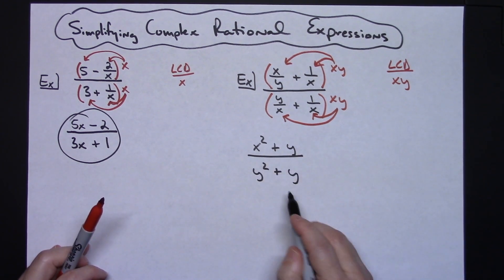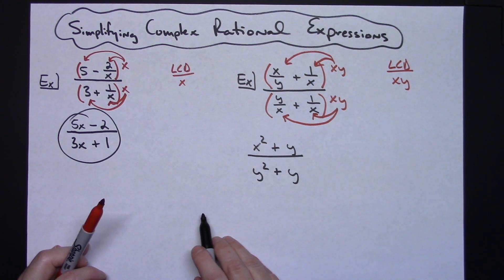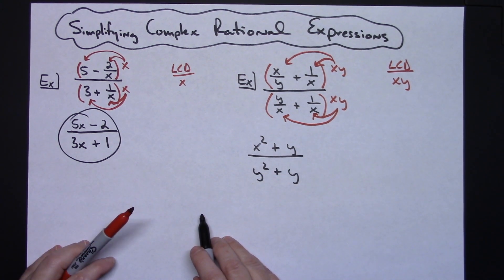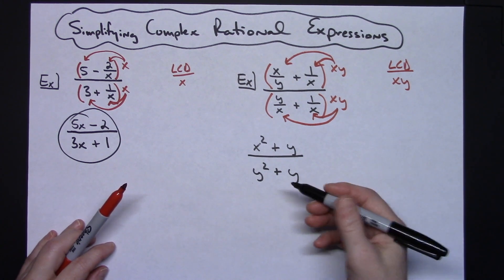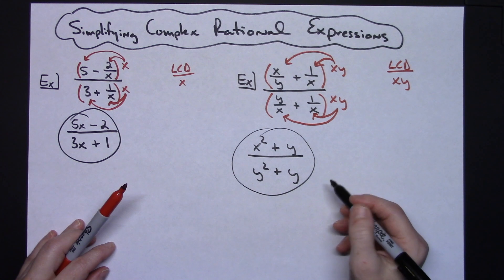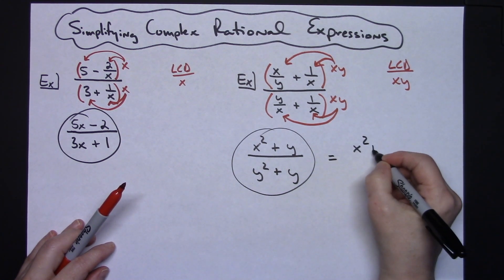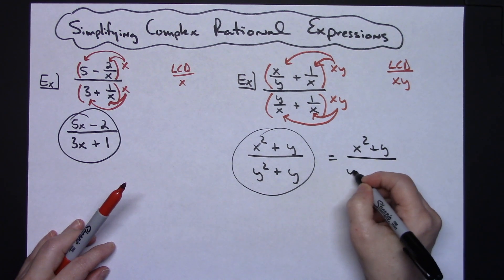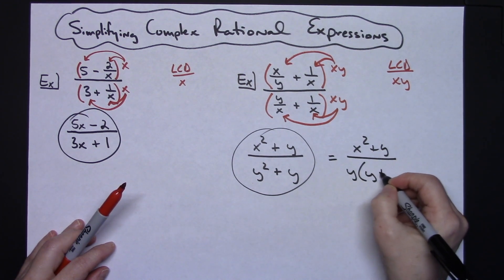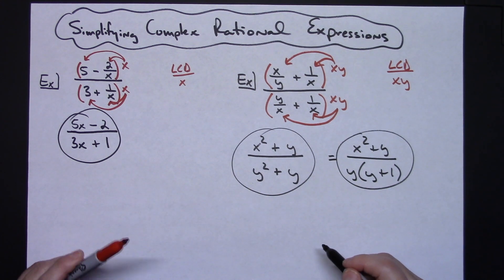Now looking at this expression, technically I could factor out a y on the bottom, but I can't factor anything out on the top, so there would be no reason to do that unless you want that expression in completely factored form. So this would be a perfectly acceptable answer, or I could do the x squared plus y and then factoring out a y there would be a y plus 1. Technically either one of those answers would be correct for that.